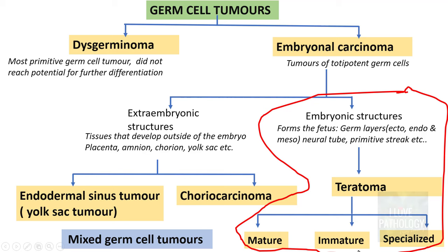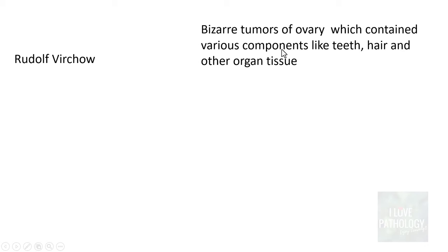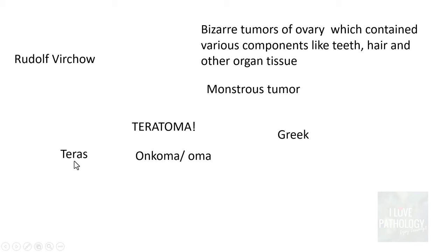What is teratoma? Let's look at some historical aspects. Rudolf Virchow, who is considered the father of pathology, while examining some tumours of the ovary, found that some of them were bizarre — containing various components like teeth, hair, and other organ tissue. He found these tumours monstrous, and that's why he named them teratomas. Teratoma is a Greek terminology — a combination of 'teras' meaning monster, and 'oma' meaning tumour or swelling.